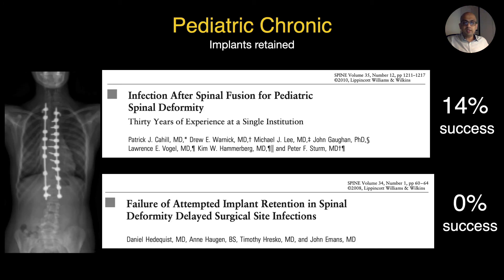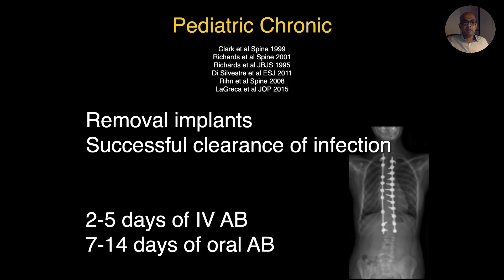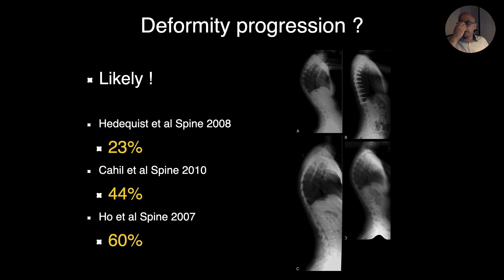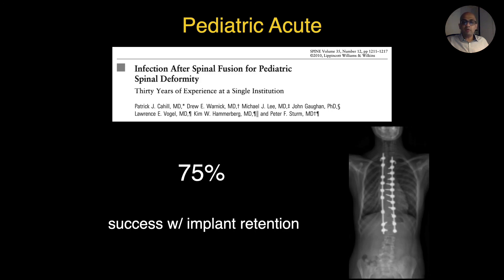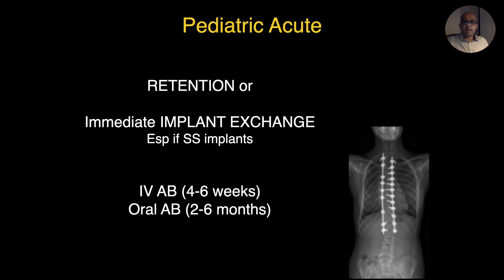In pediatric scoliosis surgeries, for chronic infections the success of infection control is very poor if implants are retained. Many papers have advocated removal of implants for successful clearance of chronic infection. The spine is not unstable, at least in patients without 3-column osteotomy; however, the deformity can progress, and this depends on when implants were removed — before or after successful fusion. This may require re-implantation at a later date. For acute infections, 3 out of 4 times the implants can be retained, so the recommendation is to try implant retention, exchange, or reduction of biofilm burden. Longer duration of antibiotics is necessary if implants remain in situ.